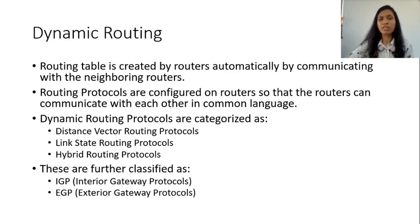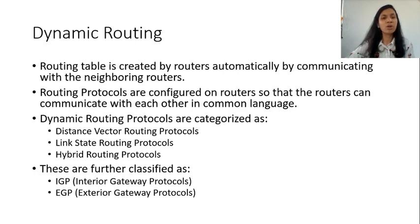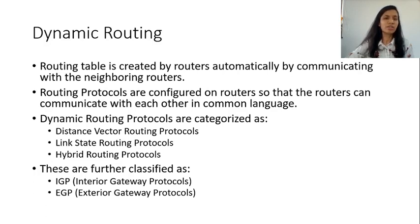In case of link state routing protocols, the routers do not rely on routing information from the neighboring router to build their own routing table — they build their own routing table by themselves. Also, in case of link state routing protocol, there are triggered updates, and hence convergence is fast as compared to distance vector routing protocols.